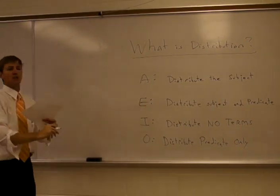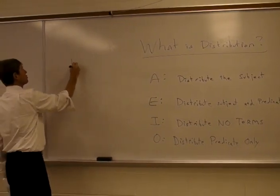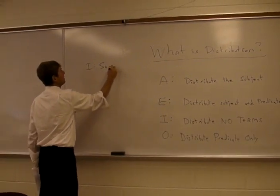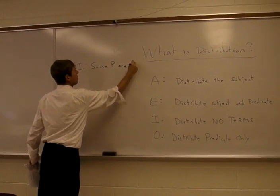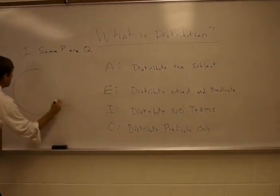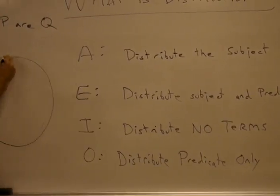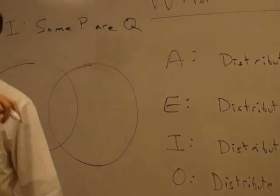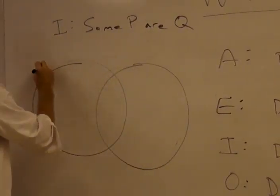Now particular statements will start out with I. Some P are Q. Some philosophy instructors are persons who wear bow ties. That would be an I statement.